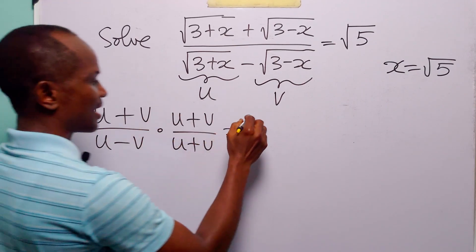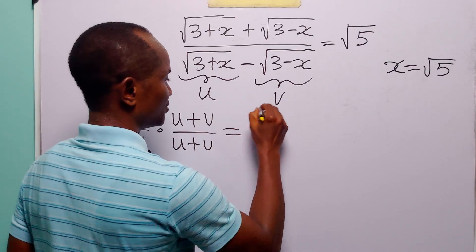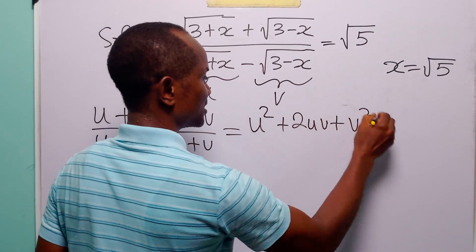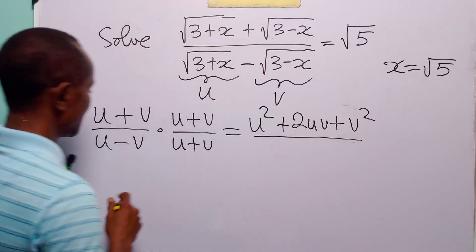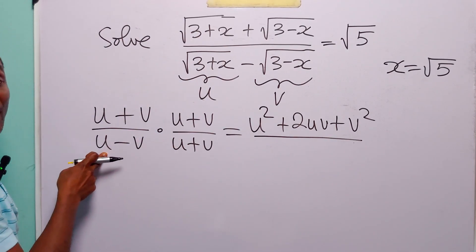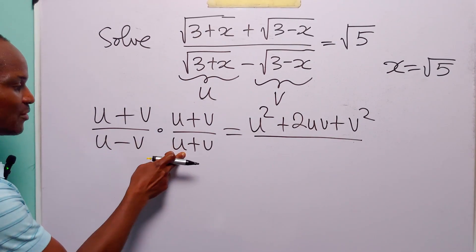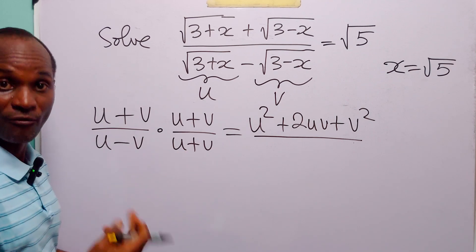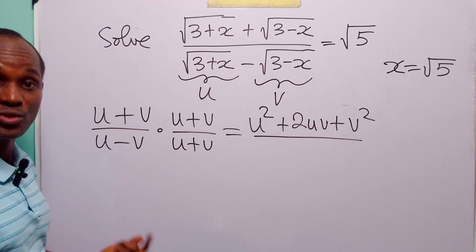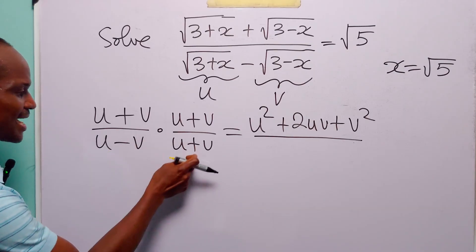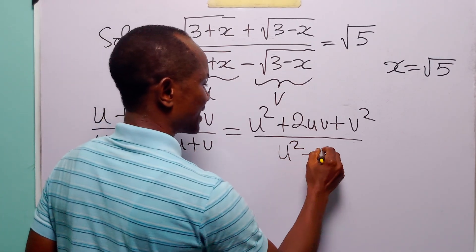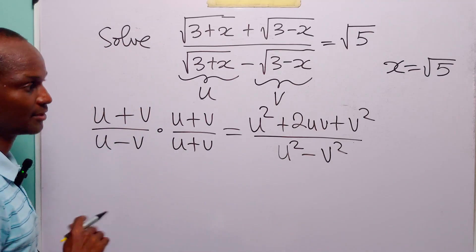In the numerator we have (u plus v) multiplied by (u plus v), which is (u plus v) squared, giving u squared plus 2uv plus v squared. In the denominator we have (u minus v) times (u plus v), which is the difference of two squares, giving u squared minus v squared.